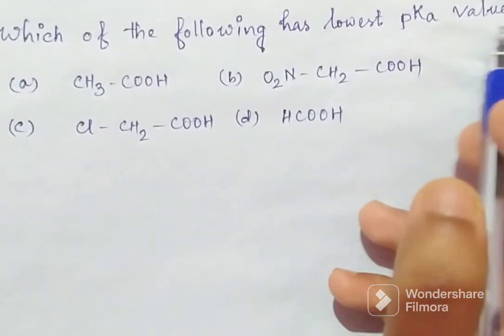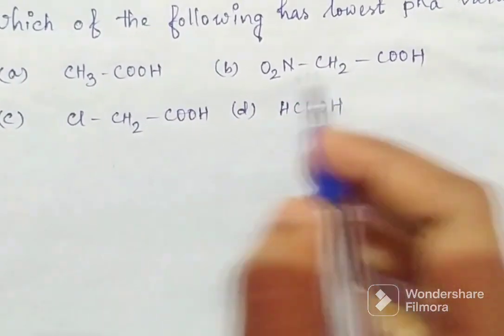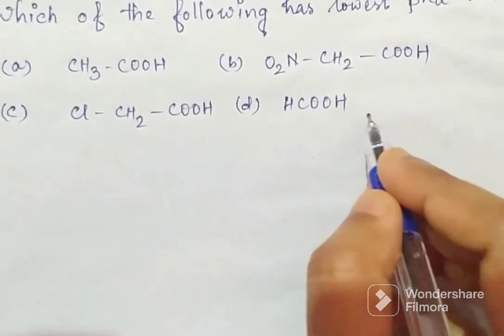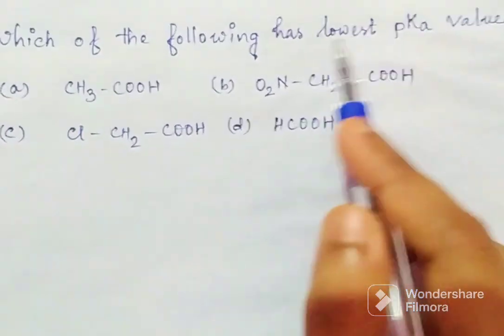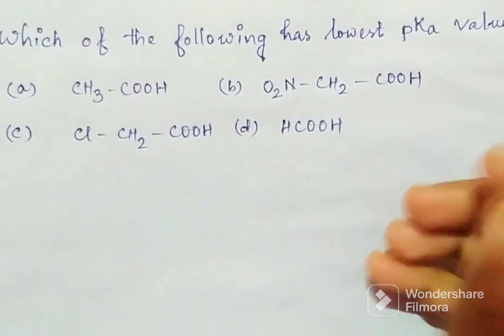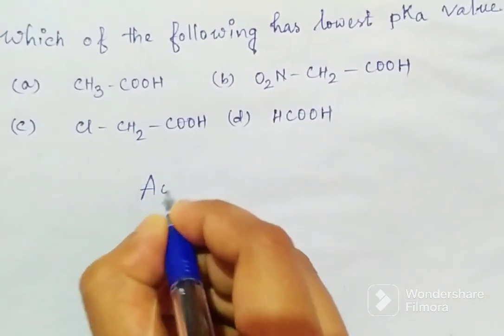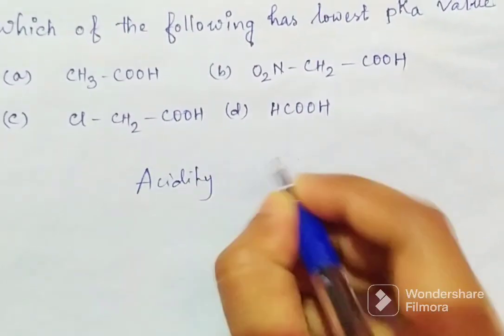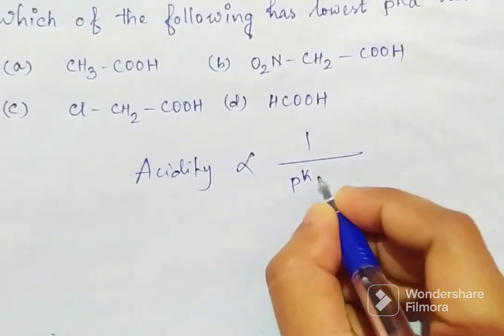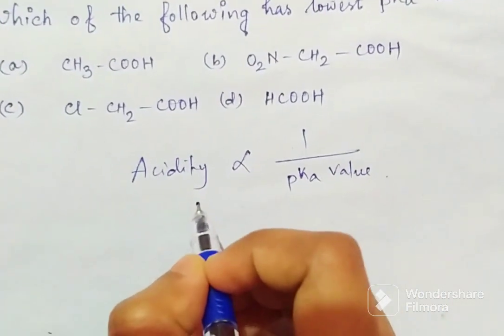Which of the following has the lowest pKa value? Options are given: acetic acid, nitroacetic acid, chloroacetic acid, and formic acid. When these types of questions come into the exam, you have to remember one formula: the acidity of any compound is inversely proportional to the pKa value. That means if any compound is more acidic, then it has less pKa value.